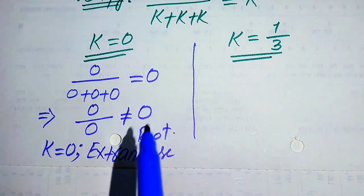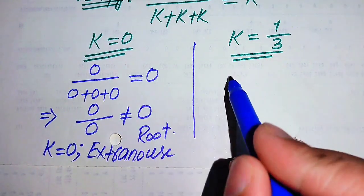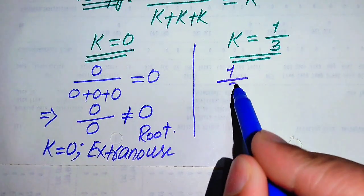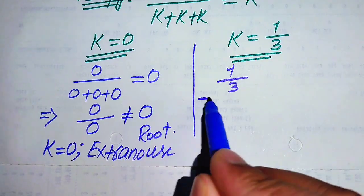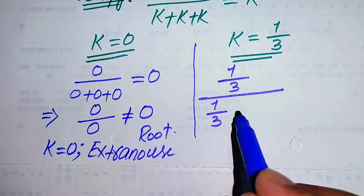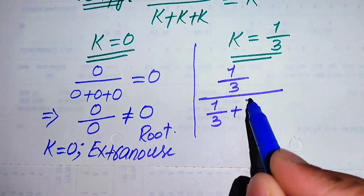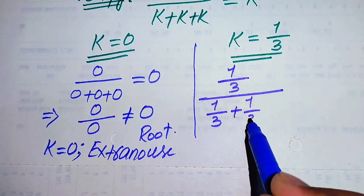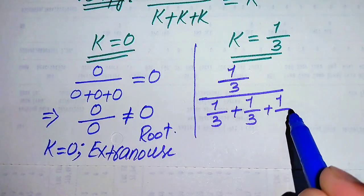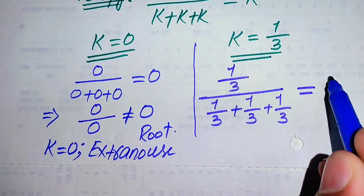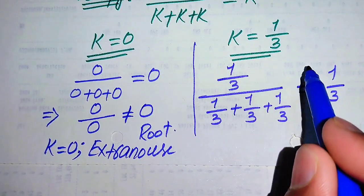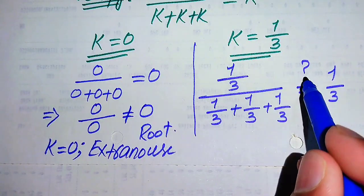When we substitute k equals 1/3, the left side becomes (1/3) divided by (1/3 + 1/3 + 1/3), and we check whether this equals 1/3.